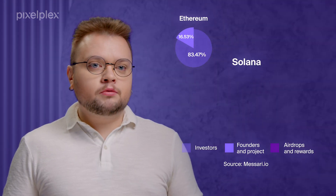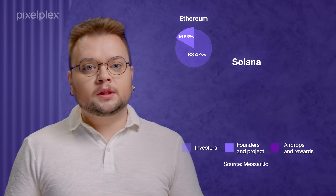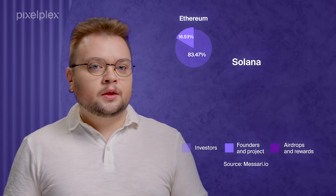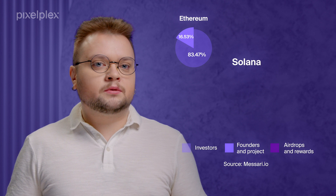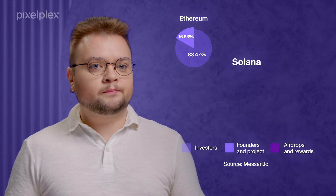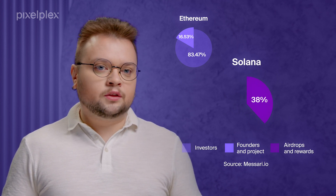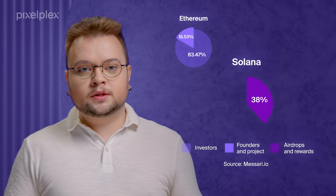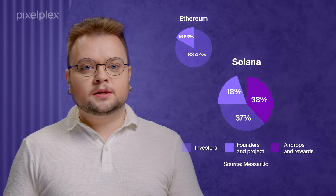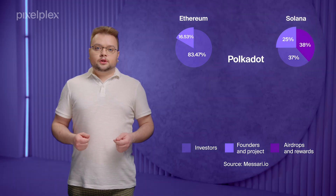The Solana blockchain launched its SOL token in 2020. The first 500 million tokens were distributed through auctions and private sales, going through five funding rounds that raised over 25 million dollars in total. 38% of the initial token supply was allocated in the form of airdrops and rewards, investors received 37%, and 25% was held by the project founders.